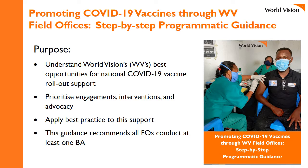I also want to mention we do have guidance in World Vision called Promoting COVID-19 Vaccines through World Vision Field Offices Step-by-Step Programmatic Guidance. The purpose of that is so that you can understand World Vision's best opportunities for national COVID-19 vaccine rollout support. You can prioritize engagements, interventions and advocacy. You can apply best practice to this support, and the guidance recommends that all field offices conduct at least one barrier analysis in their country. We have a link to that at the end of this presentation.